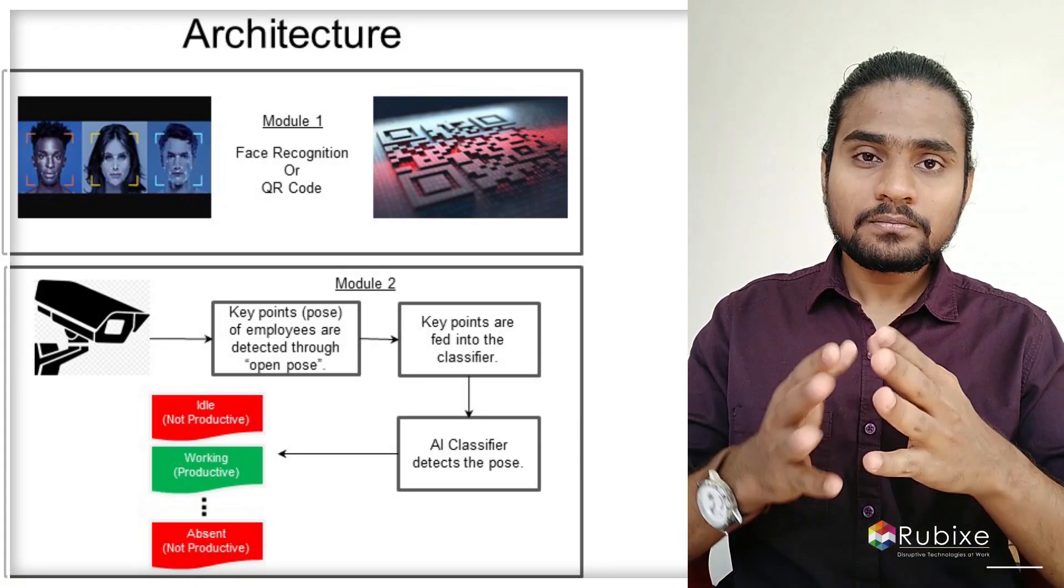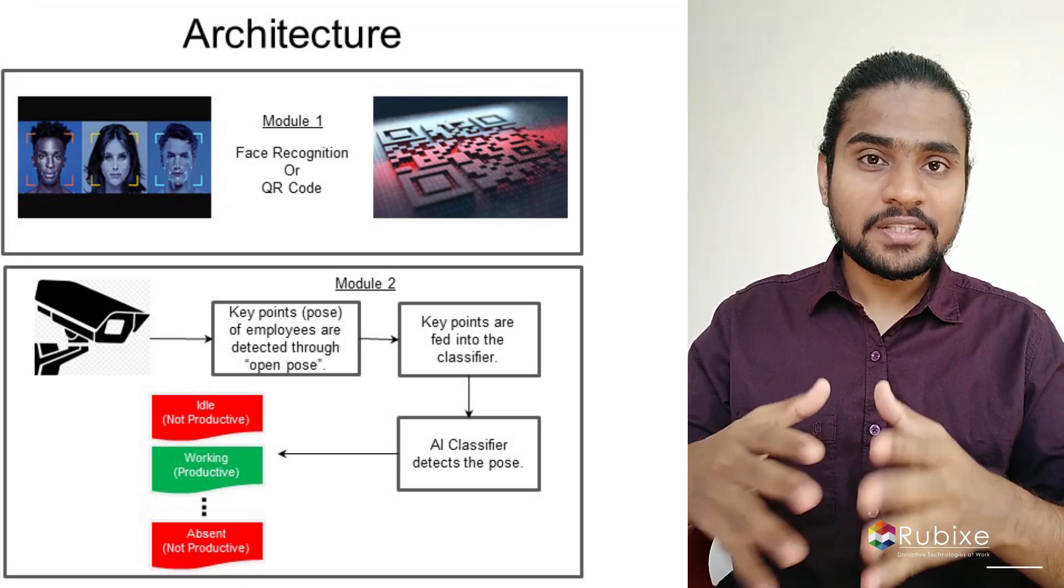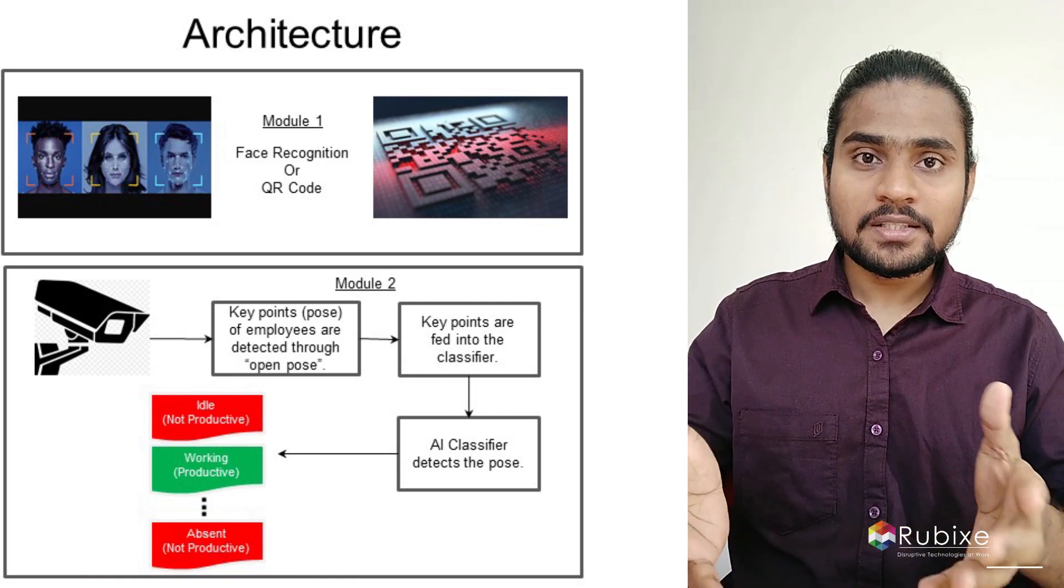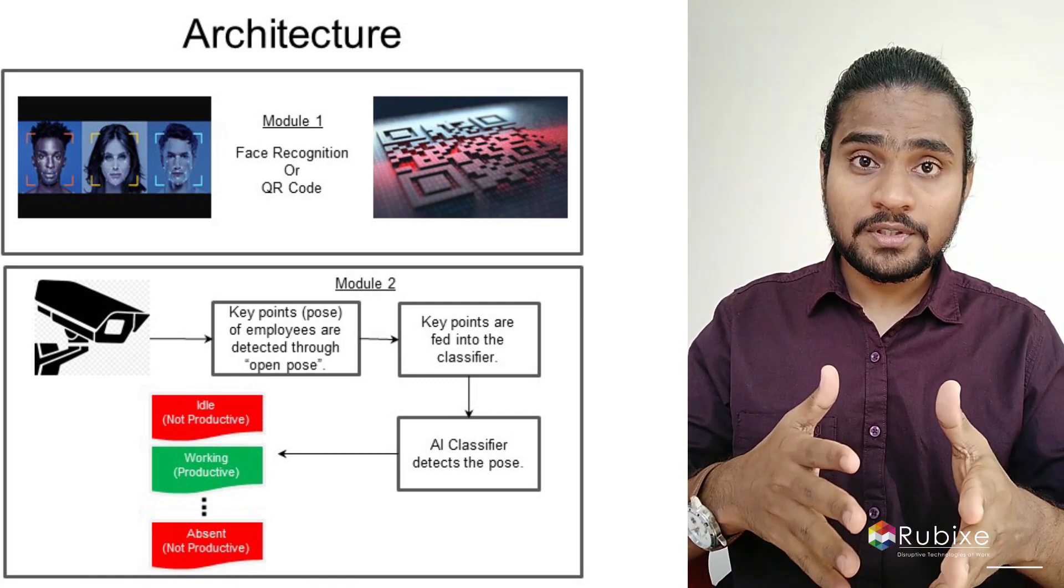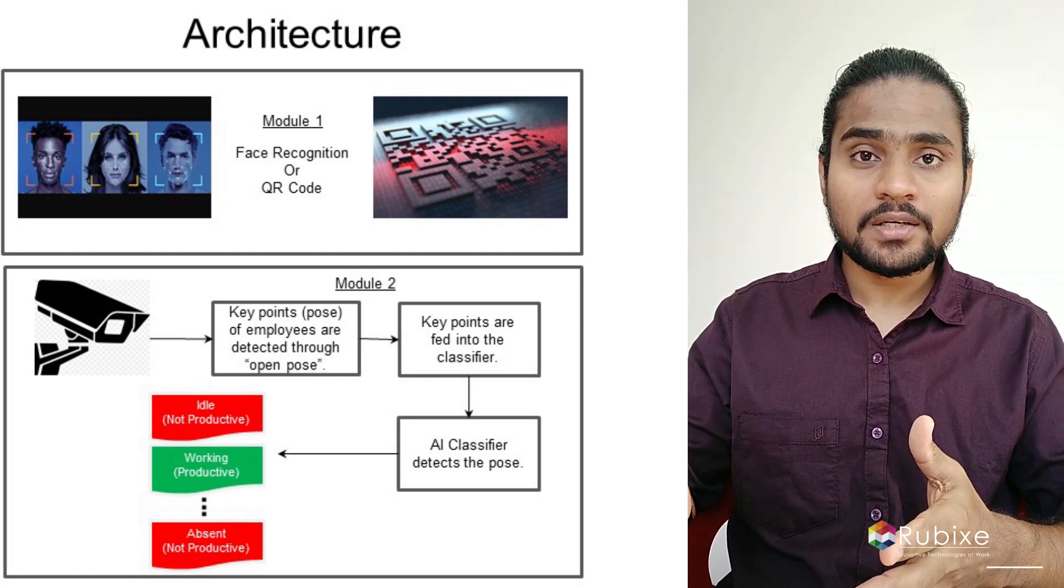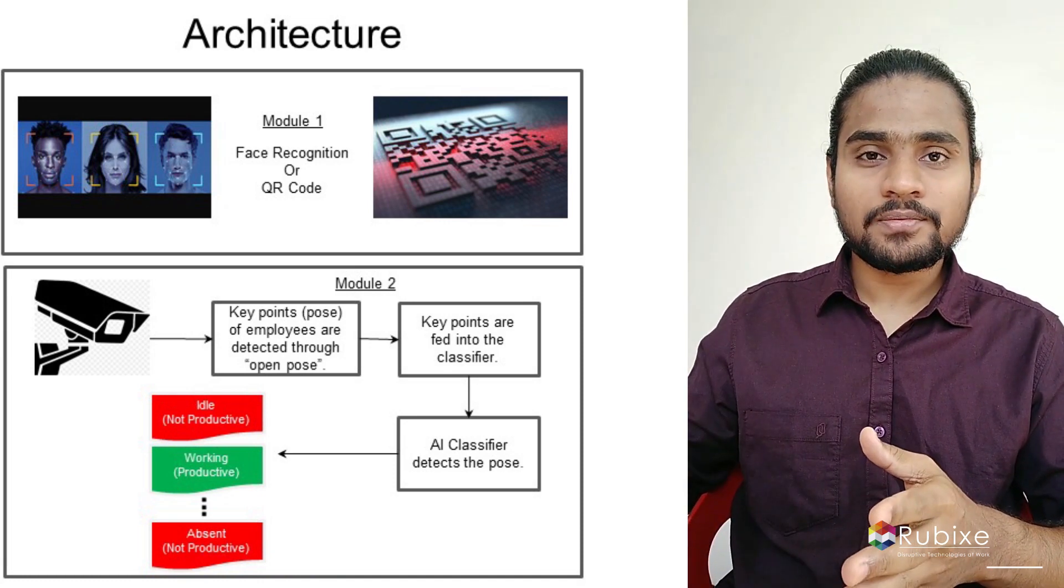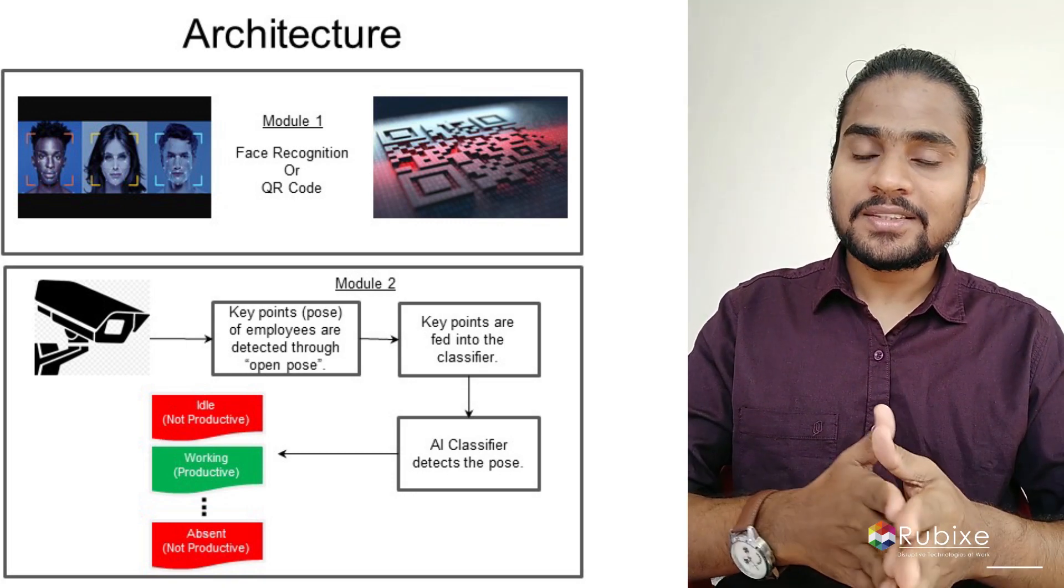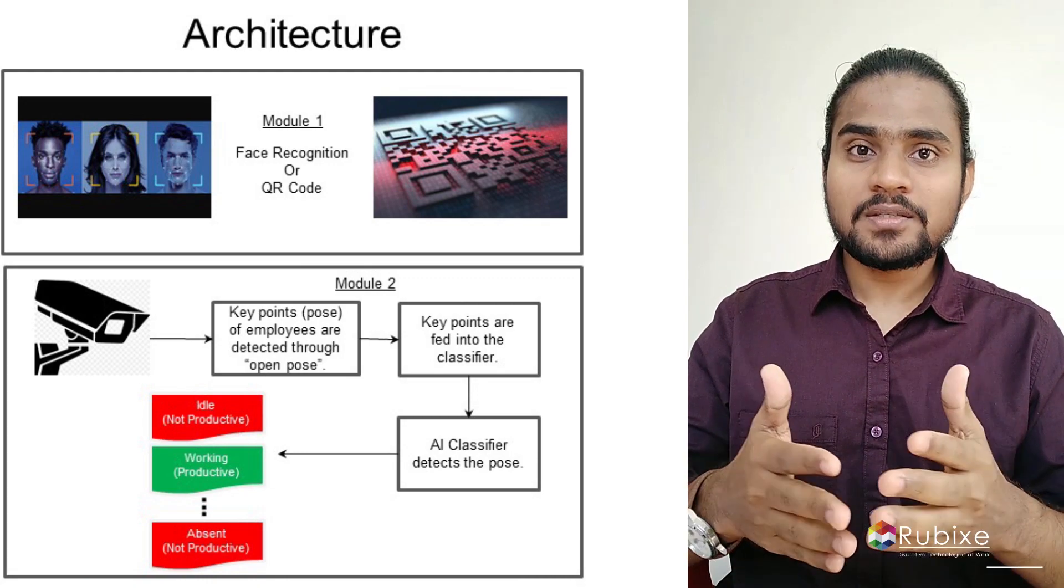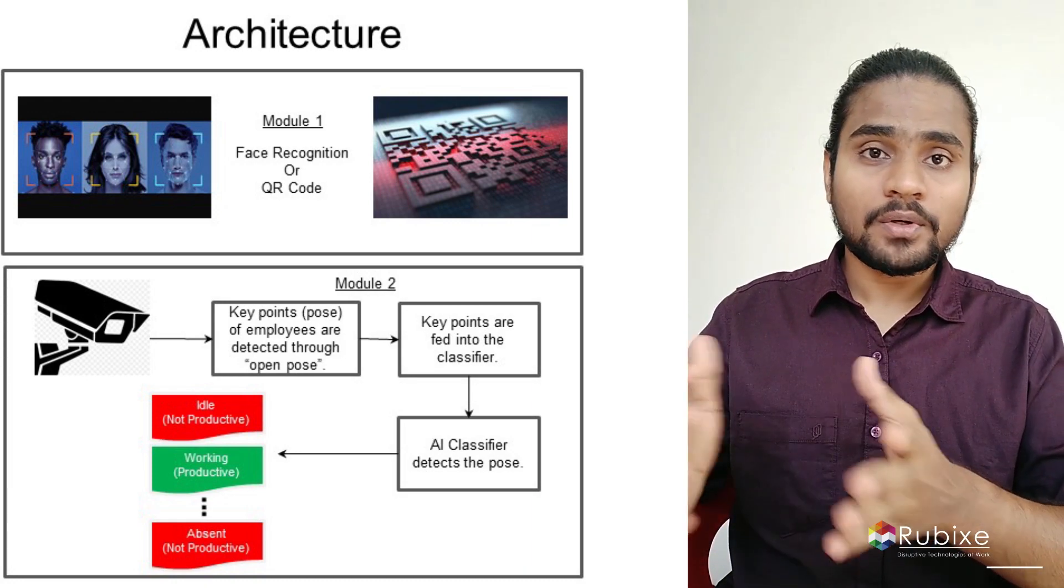Once we get the human structure, we can train n number of poses which can be categorized. For example, we are categorizing as being productive and being non-productive. Let's take three poses: standing, walking, and operating a computer. Technically standing and walking can be termed as non-productive body movement, whereas operating a computer can be said as a productive movement. Based on that, we'll be able to train and classify n number of body movements of an employee and tag it according to the productiveness.